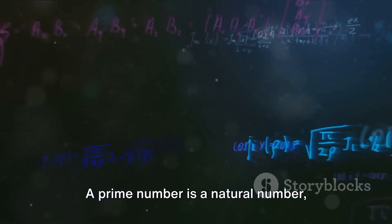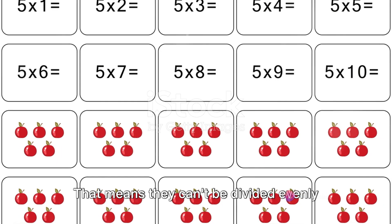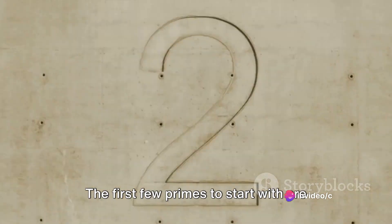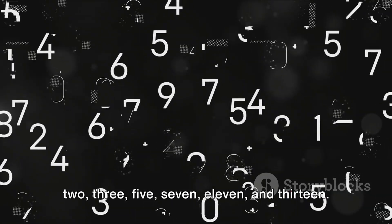A prime number is a natural number, greater than 1, that has no positive divisors other than 1 and itself. That means they can't be divided evenly by any other numbers except for 1 and the number itself. The first few primes to start with are 2, 3, 5, 7, 11, and 13.